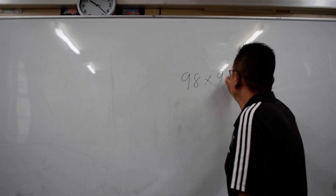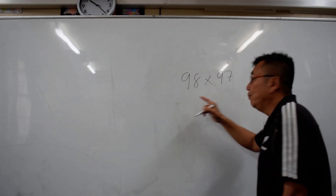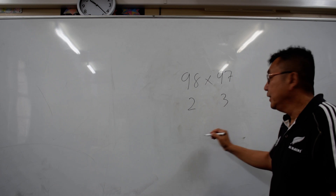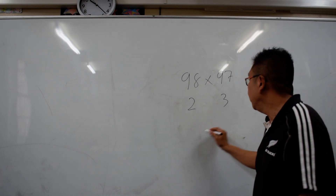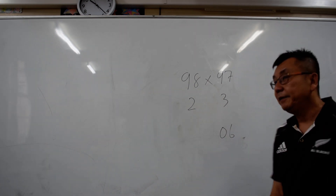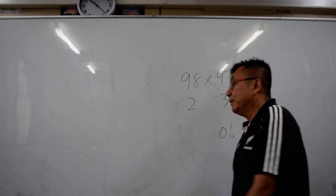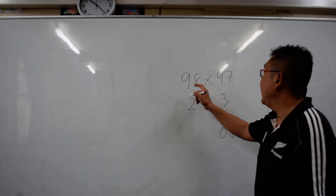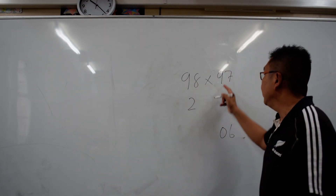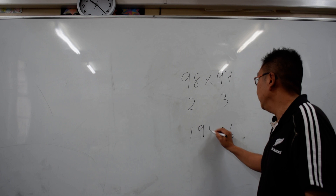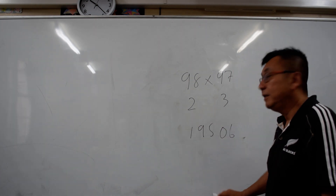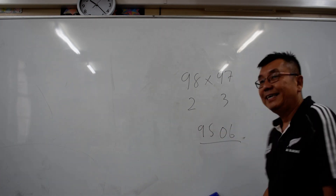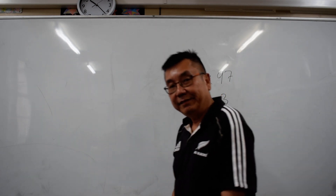98 times 97. To make it 100 you need 2, and to make it 100 you need 3. So 2 times 3 is 6, making the last 2 digits 06. Then you add 98 and 97 to get 195, delete the 1, and the answer is 9506.